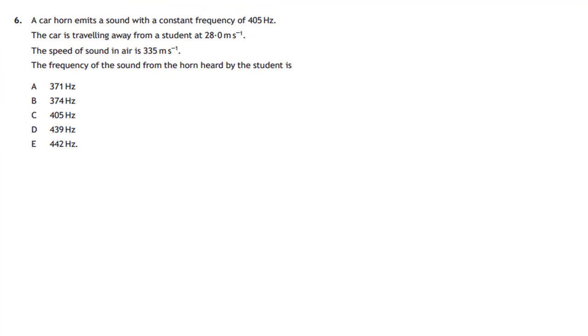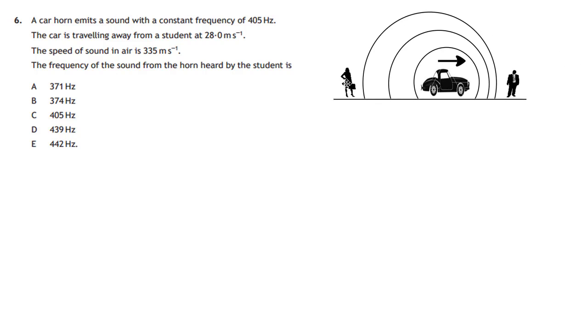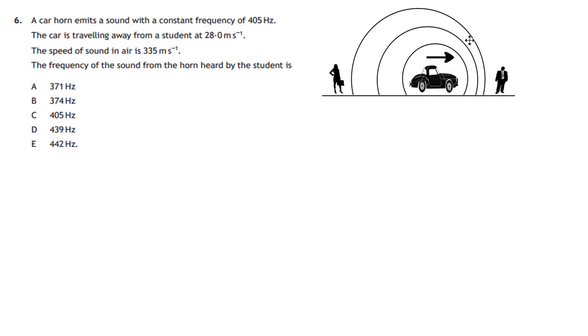Question 6 of the 2016 Higher Physics multiple choice is all about the Doppler effect. It tells us here a car horn emits a sound with a constant frequency of 405 hertz. The car is traveling away from a student at 28 m/s. You're given the speed of sound and you're asked to find the frequency of the sound heard by the student.